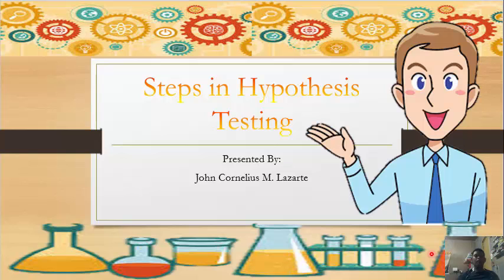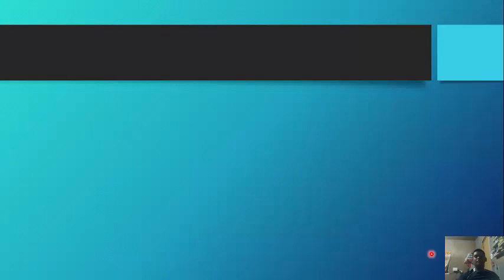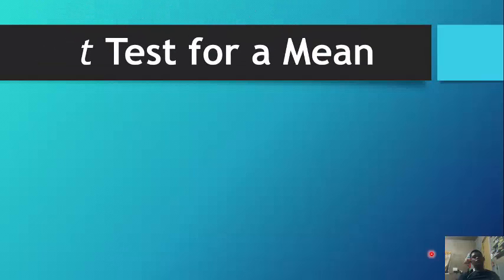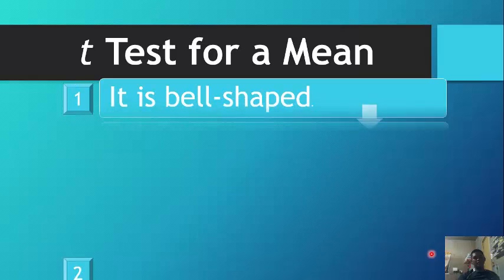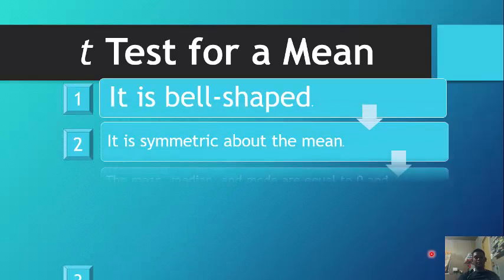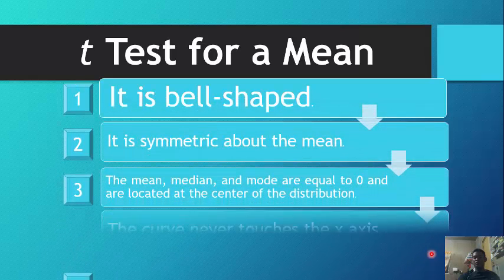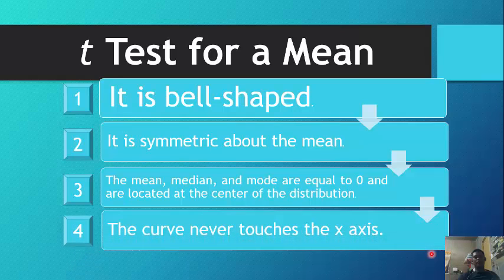Good afternoon everyone. We are proceeding to our next topic in hypothesis testing: the t-test for a mean. The t-distribution is bell-shaped and symmetric about the mean. The mean, median, and mode are equal to zero and are located at the center of the distribution. The curve never touches the x-axis.